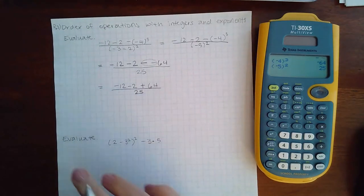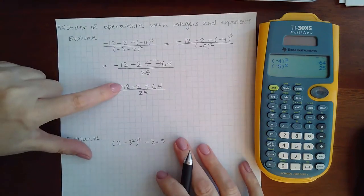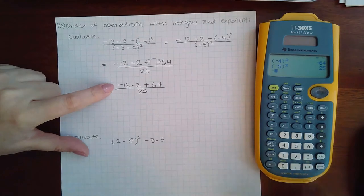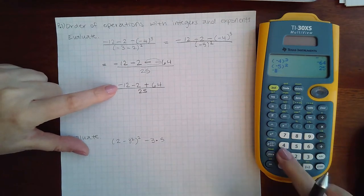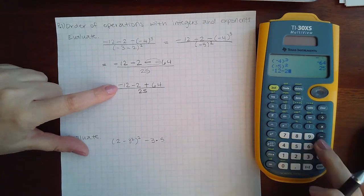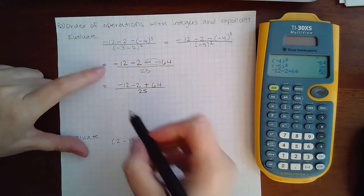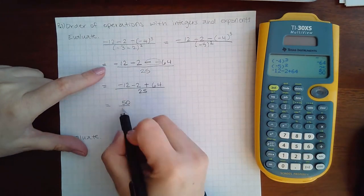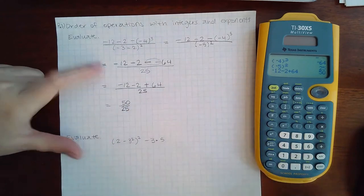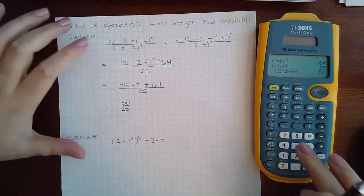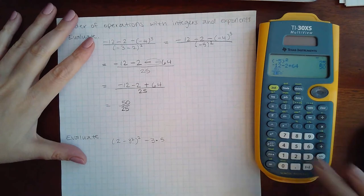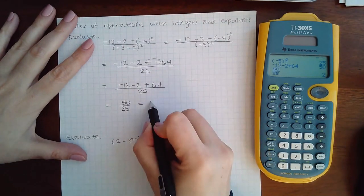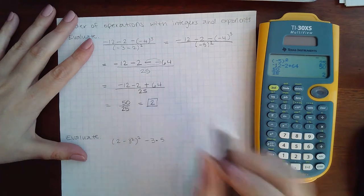And so in the very front, this cannot be a minus because then that means there would need to be something in front of it. So I have to use the negative for the 12. So negative 12 minus 2 plus 64. I end up with 50 in the numerator. And 25 is still by itself in the denominator. And then finally, I reduce this in the calculator just by typing it in. It'll reduce it for me. The answer is 2.